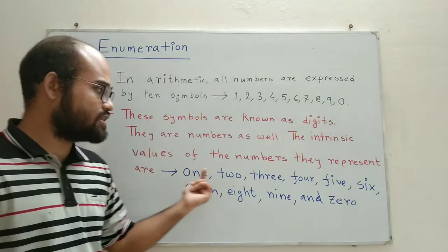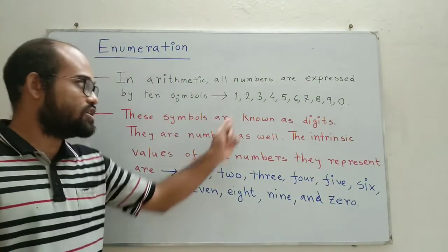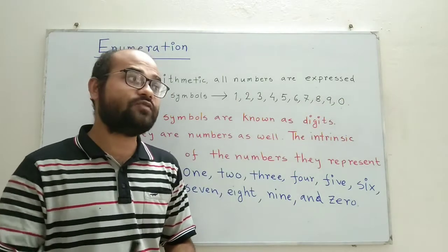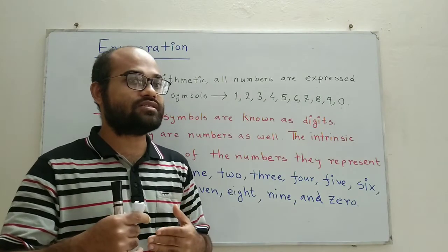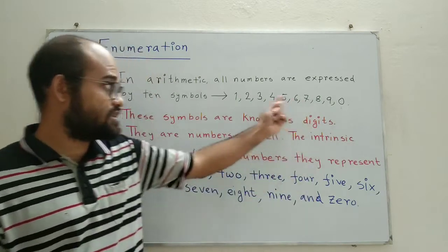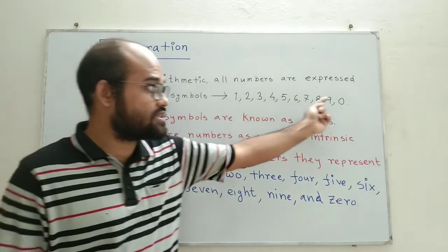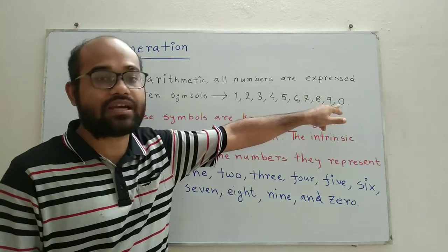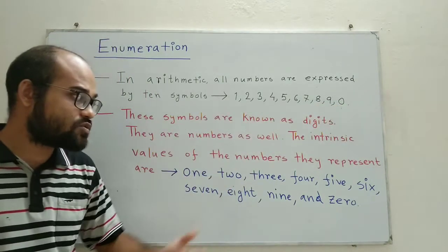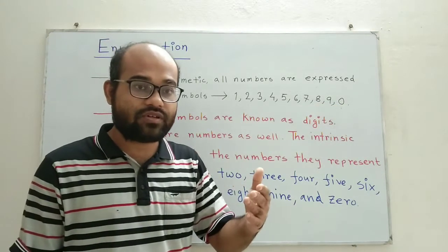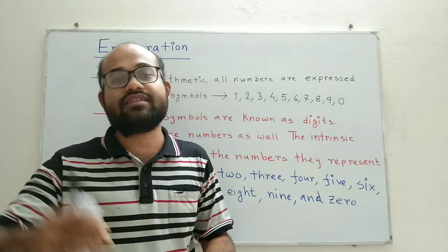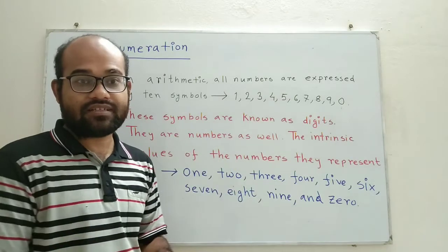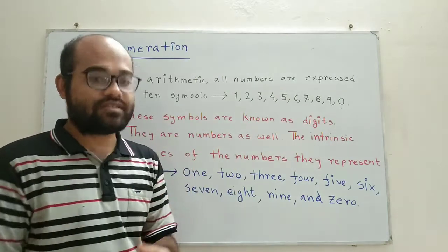We can express all these numbers written in blue using the digits listed above. But if we need to express numbers greater than 9, using these digits, up to which number can I express? I can express a maximum of 9. But if I need to express numbers greater than 9, such as 10, 11, 12, and so on, I need to place these digits side by side and then express them.